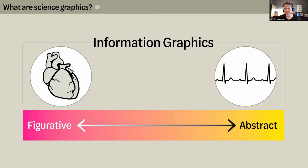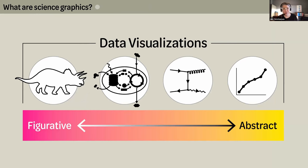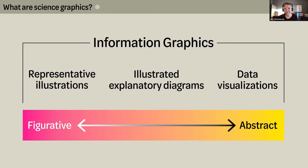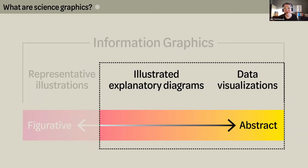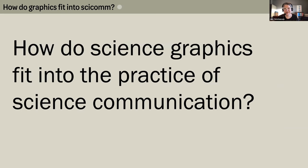I tend to think of information graphics as a continuum, with figurative representations on one end and abstract representations on the other. In the world of science, that full continuum can also be referred to as data visualizations — from bone-length measurements in dinosaur reconstructions, to representations of mathematical expressions like Feynman diagrams, to straight-up plotting raw data in chart form. It's probably more useful to think of the continuum with representative illustrations at one end, data visualizations on the other, and illustrated explanatory diagrams in the middle.